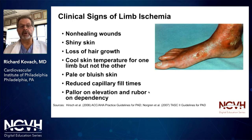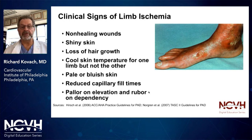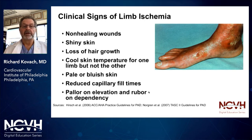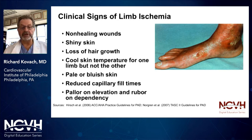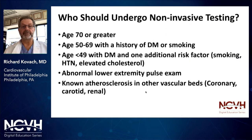What are the signs of critical limb ischemia or significant limb ischemia on physical exam? Certainly non-healing wounds, shiny skin, loss of hair growth, cool skin temperature in one limb compared to the other, pale or bluish skin, reduced capillary refill times, pallor on elevation, and rubor on dependency.